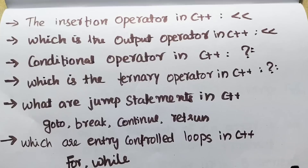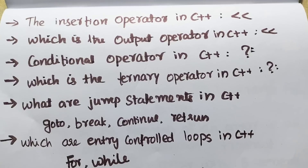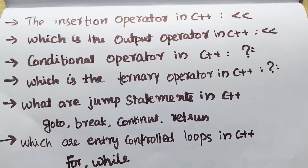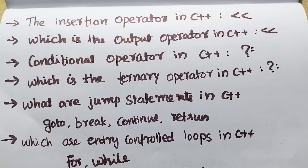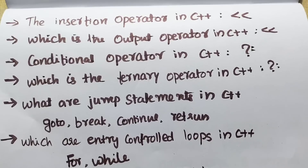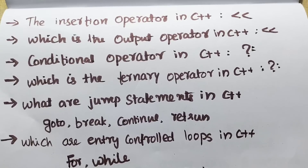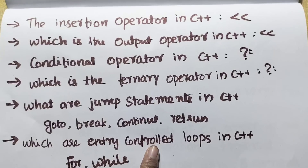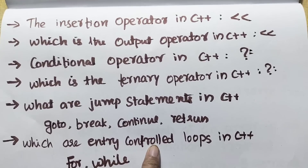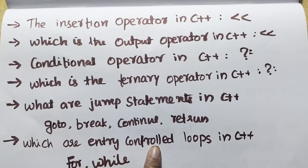The insertion operator in C++ — what is the symbol? We will learn the output operator symbol in C++. The conditional operator in C++ uses the question mark symbol, which is also the ternary operator in C++. All these operator symbols are very important.